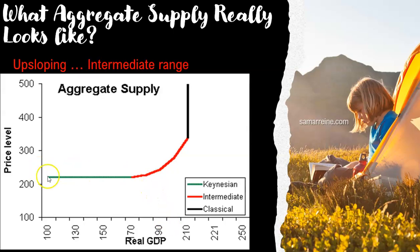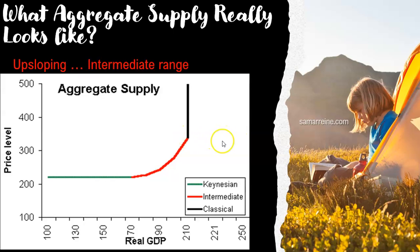Price level and real GDP are not independent of one another. So most economists say the upsloping intermediate range is what the aggregate supply curve actually looks like, and we continue to represent it that way. Nothing new there.